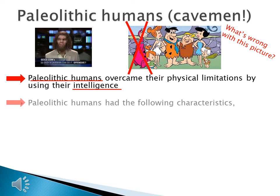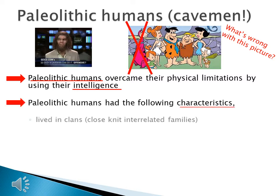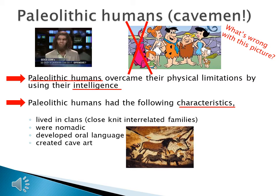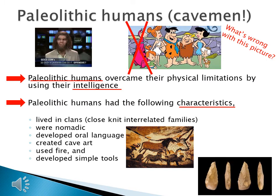Paleolithic humans had the following characteristics: they lived in clans, which are close-knit interrelated families; they were nomadic and moved around; they developed an oral language and talked to each other; they created cave art, like the art shown here; they used fire; and they even developed simple tools.